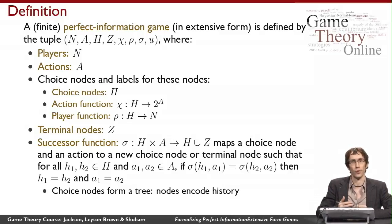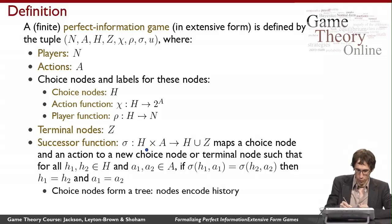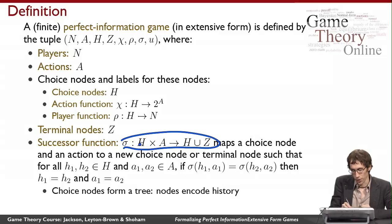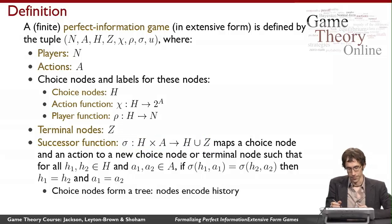Now we need the edges in the game tree, built using the successor function σ. The way it works is that it's a mapping from a choice node and an action taken in that choice node to a new node. That new node can be either another choice node or a terminal node. We want the successor function combined with the nodes to define a tree.